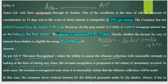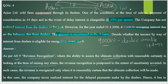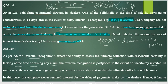Arjun Limited gives goods to the dealer (say, Ashok), whose duty is to sell and pay back within 14 days. If he fails, interest is charged. In this case, the company has never realized interest from dealers for delayed payment in the past, hence it is not considered as revenue.